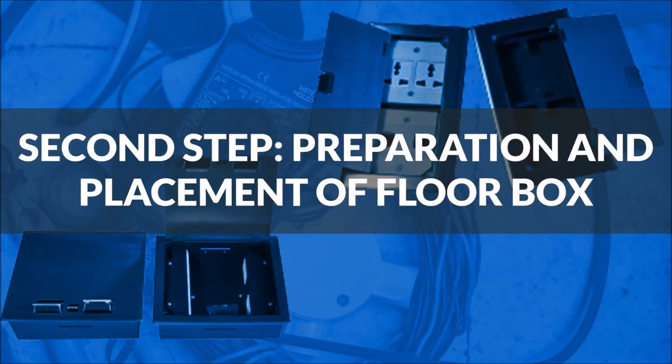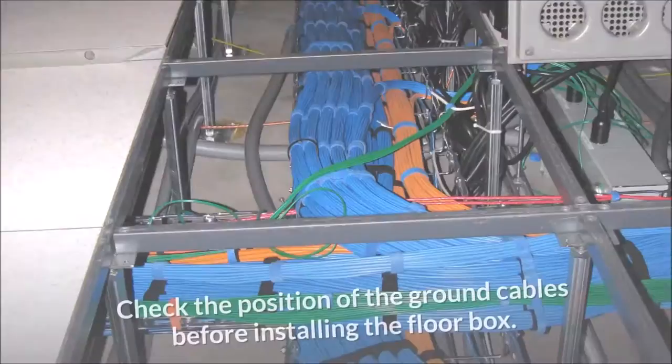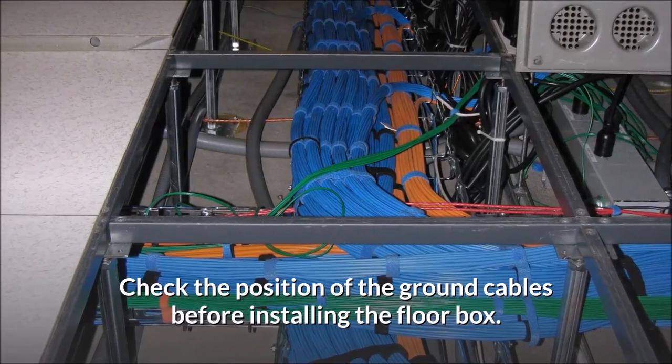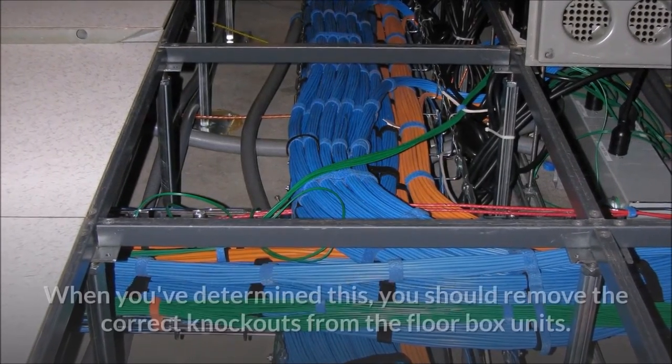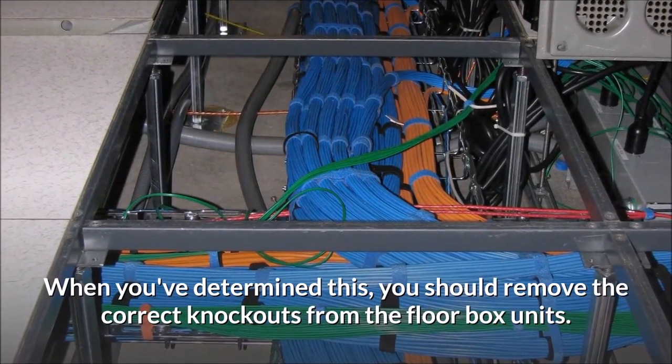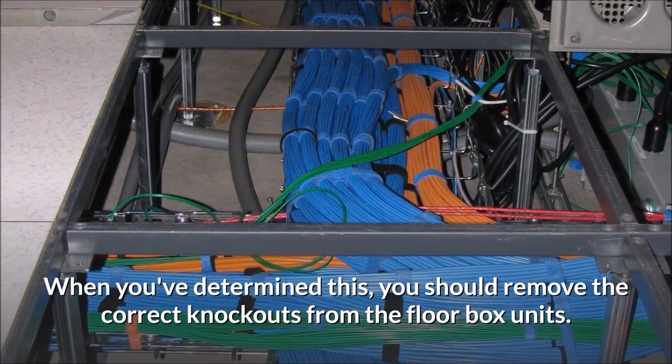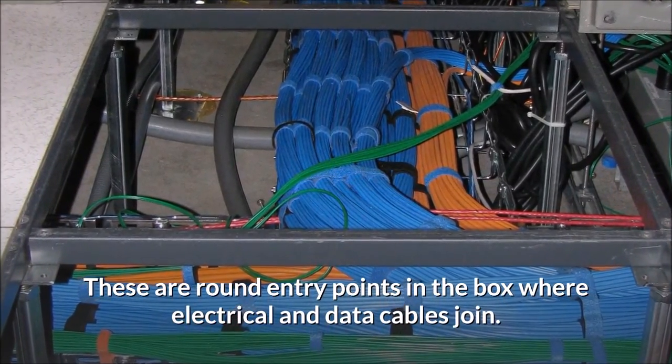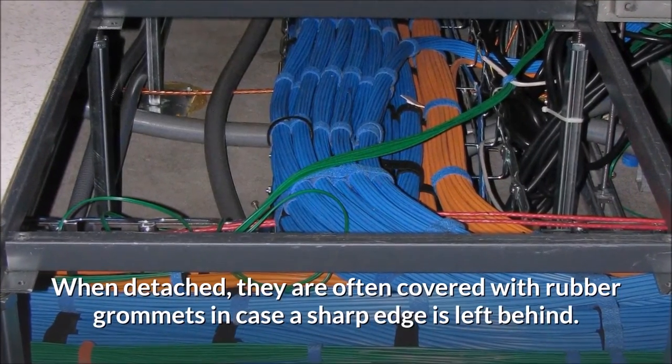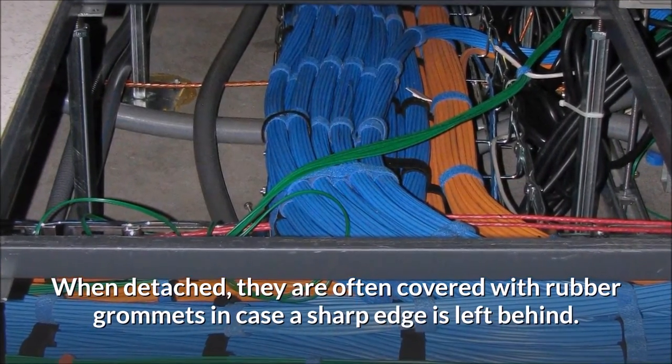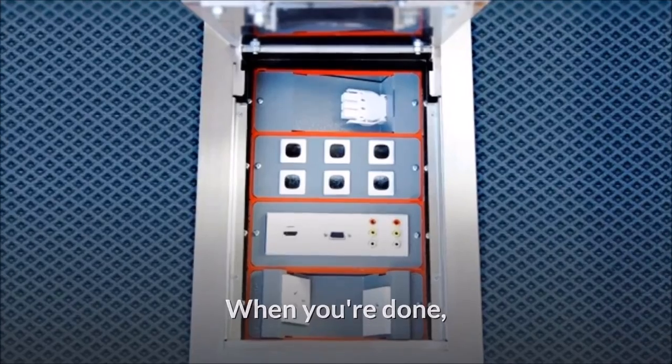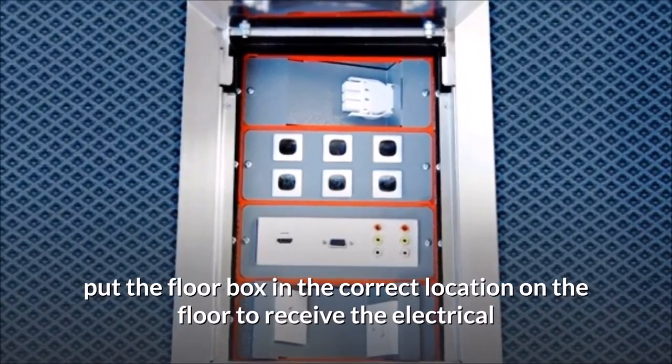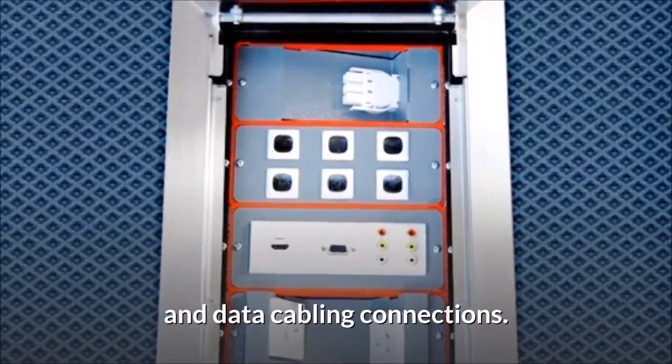Second step, preparation and placement of floor box. Check the position of the ground cables before installing the floor box. When you've determined this, you should remove the correct knockouts from the floor box units. These are round entry points in the box where electrical and data cables join. When detached, they are often covered with rubber grommets in case a sharp edge is left behind. When you're done, put the floor box in the correct location on the floor to receive the electrical and data cabling connections.